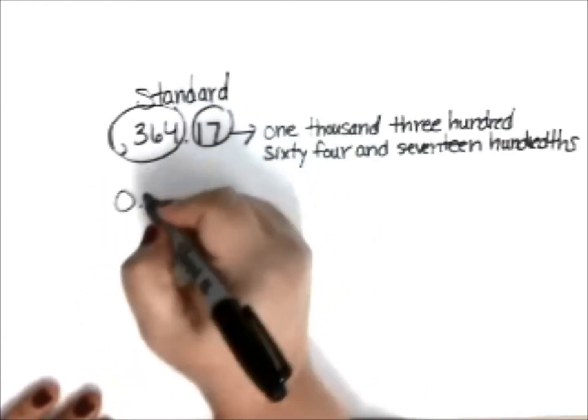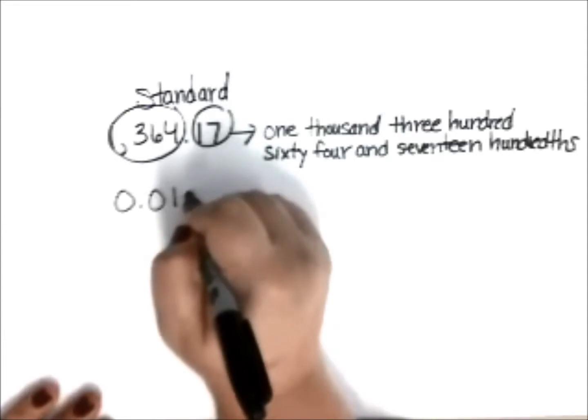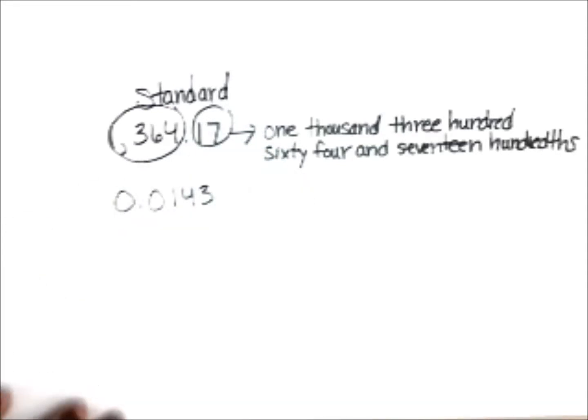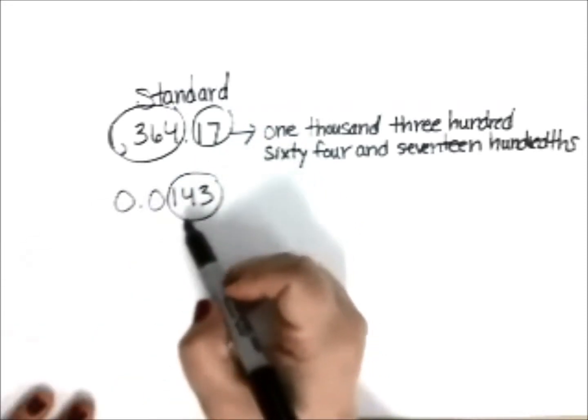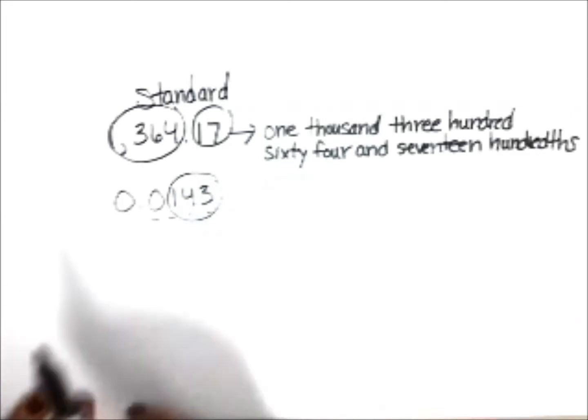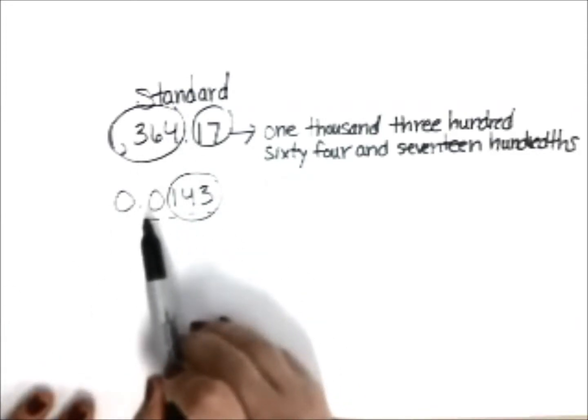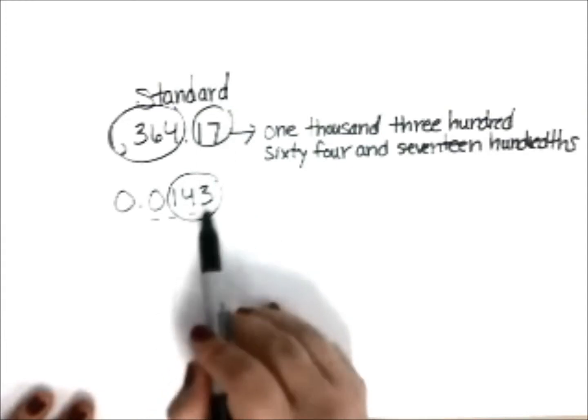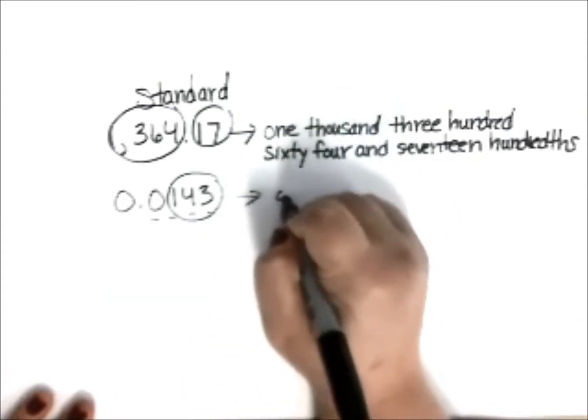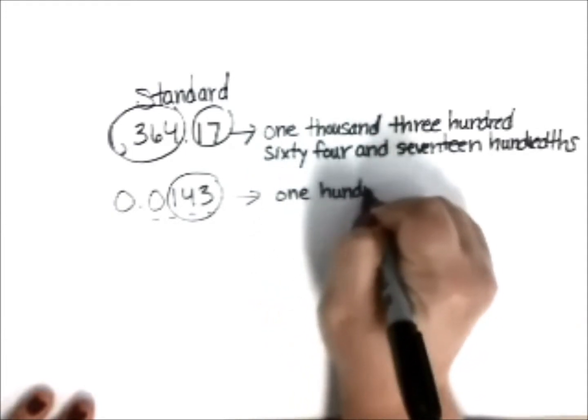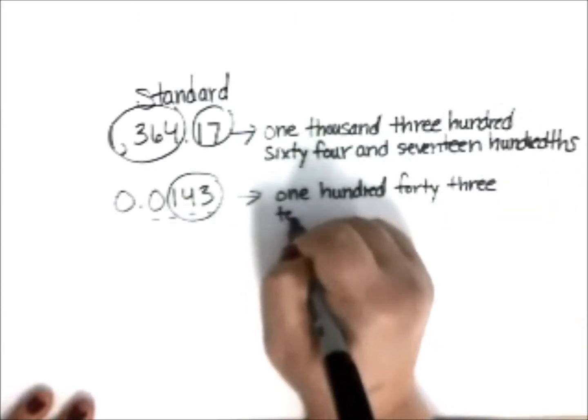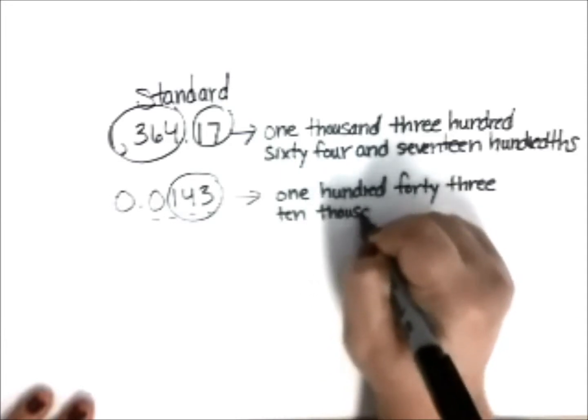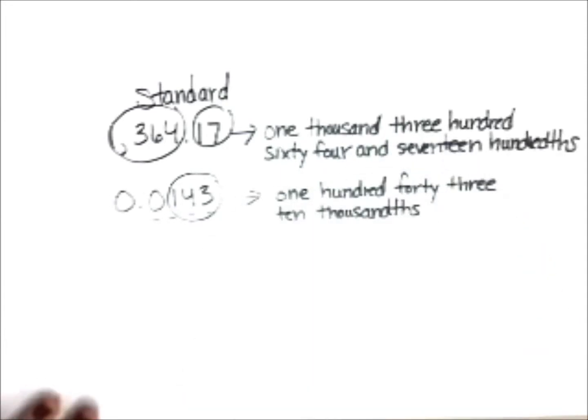Let's do something with a zero before the decimal point. Now we don't say zero and. We just say what's behind the decimal point. We're going to say this as a whole number. And then the last bit is the final place value. So as we've learned with our place value charts, this is the tenths, hundredths, thousandths, ten thousandths. So I would say this as 143 ten thousandths. Capisce?